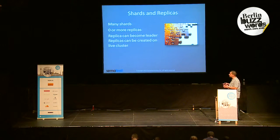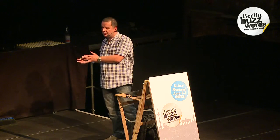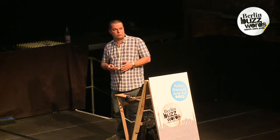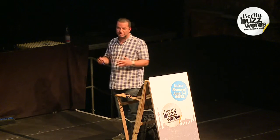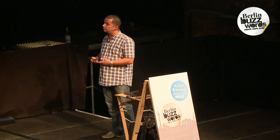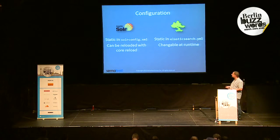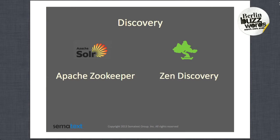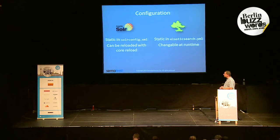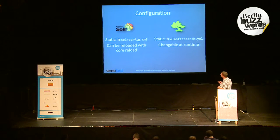Each index or collection can have many shards which the index can be divided into. Each shard can have one or zero replicas or more, which are automatically updated and can become leaders if something bad happens to the primary shard. The configuration in Solr is stored in a static config called solrconfig.xml — it can be reloaded during collection core reload, though not all properties can be reloaded. In Elasticsearch, we have a static elasticsearch.yml file which can store cluster configuration, changeable during runtime, but not all properties.